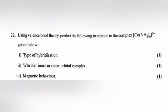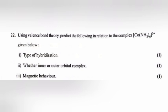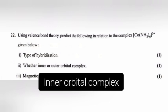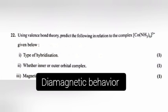Question 22: Using valence bond theory, predict the following in relation to the complex given. 22.1: Type of hybridization. Answer: d²sp³ hybridization. 22.2: Whether inner or outer orbital complex. Answer: Inner orbital complex. 22.3: Magnetic behavior. Answer: Diamagnetic behavior.